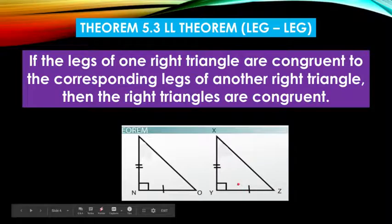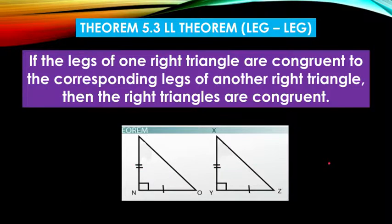As we can see, the first mark of congruence is on the first leg or on the base. And the second mark of congruence is on the second leg of our triangle.